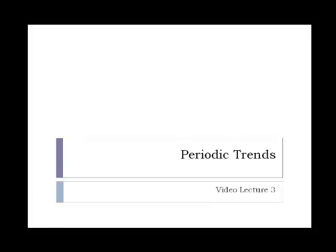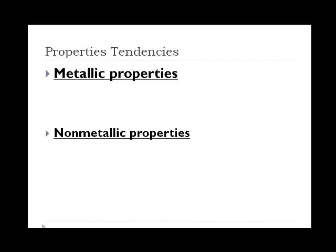Video Lecture 3: Periodic Trends. Here we're going to look at properties and tendencies, and we can distinguish properties as metallic properties or non-metallic properties. Metallic properties would be properties that most often occurred with metals, whereas non-metallic properties would be most closely associated with non-metal elements. Metallic properties tend to increase as we move left and down on the periodic table, which makes sense because the metals tend to be on the left and the non-metals on the right.